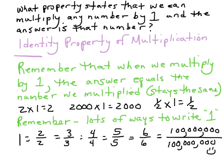So now let's go ahead and take a look at this. We're going to review the identity property of multiplication, because that's the property that states that we can multiply any number by one and the answer is going to be whatever that number is. Ten times one is going to be ten. Remember the identity property of multiplication — this is going to come in handy. When we multiply by one, the answer equals the number that we multiplied, meaning it stays the same. Two times one is two.